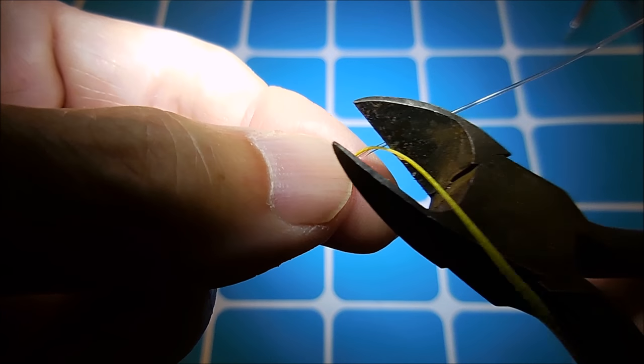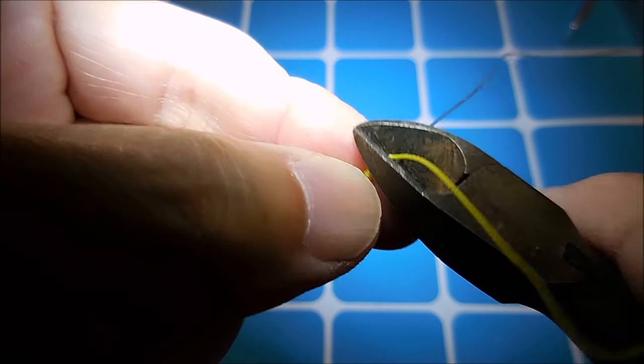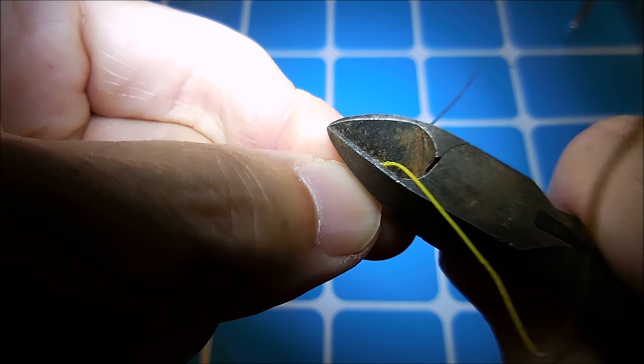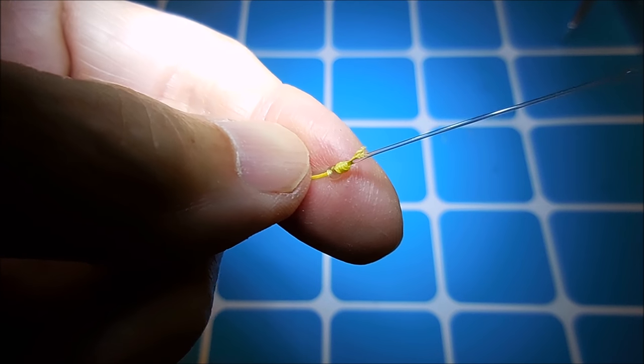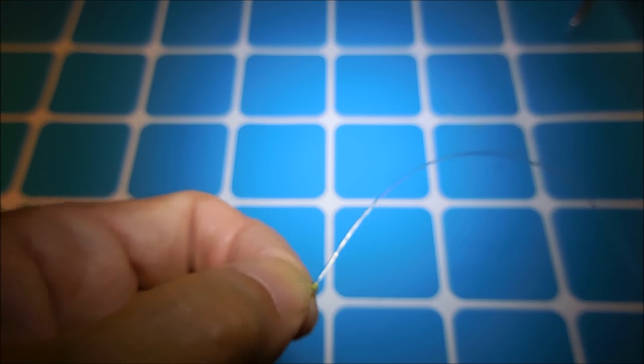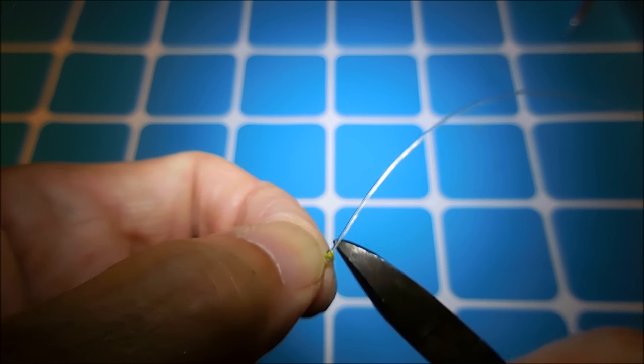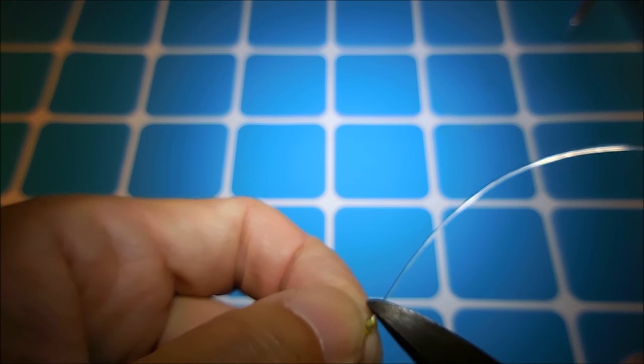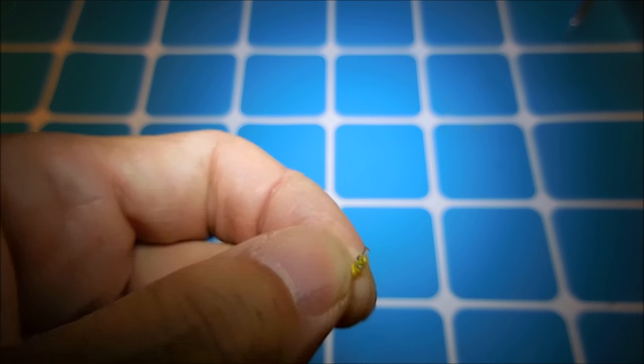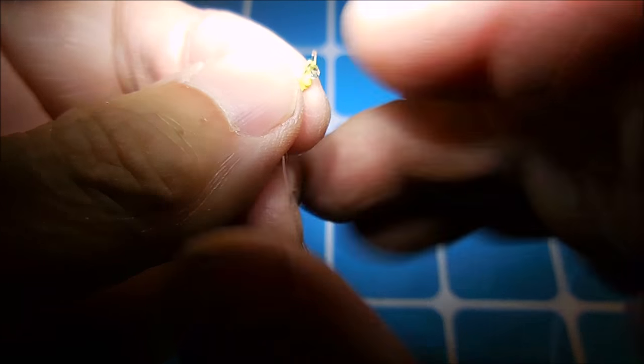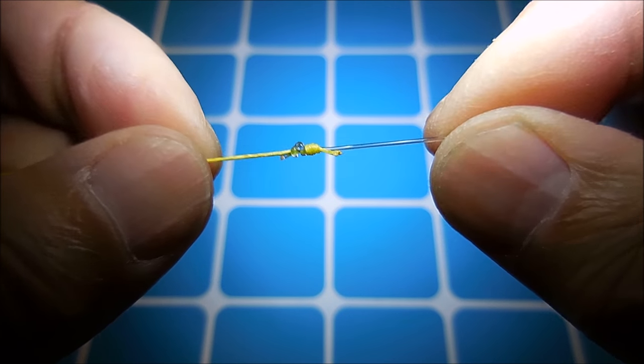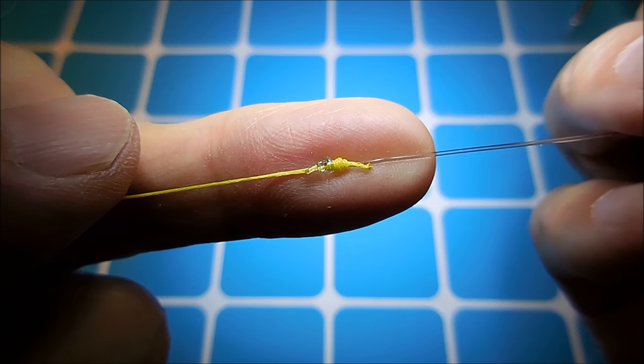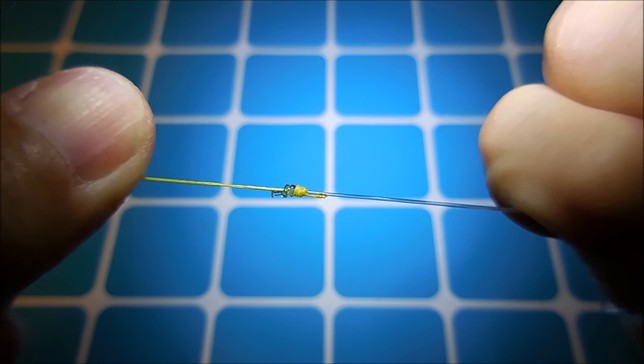To finish the knot, cut off the tag ends of the braid and mono. Now, if it's tied correctly, test it by pulling both ends tightly.